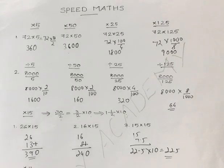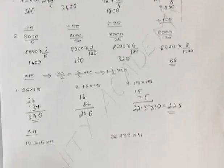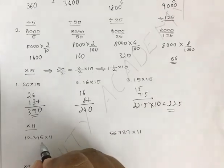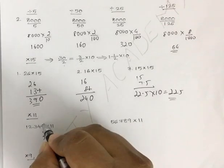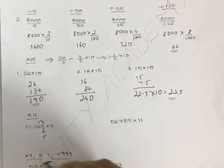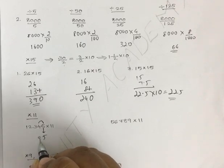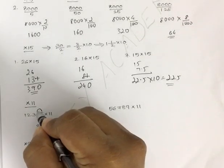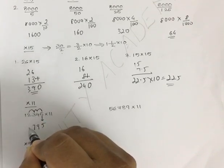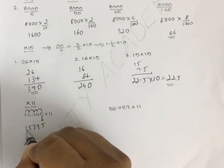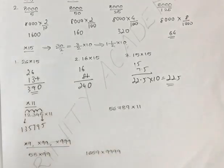Next, multiplication with 11. Taking the example 12345 into 11 — first you write down the last digit 5 below. Then add 5 to the very next digit: 5 plus 4 is 9. Again, 4 plus 3 is 7. Then 3 plus 2 is 5. Then 2 plus 1 is 3. And you write the 1 below.